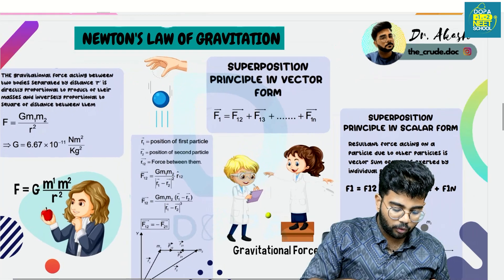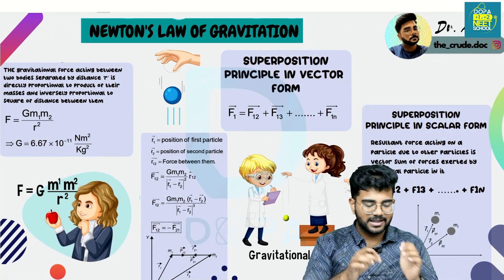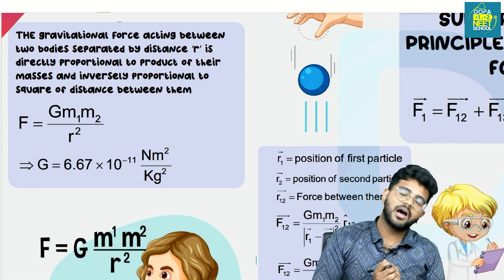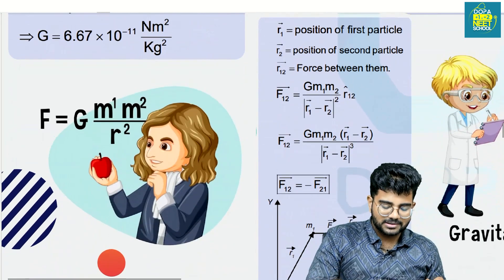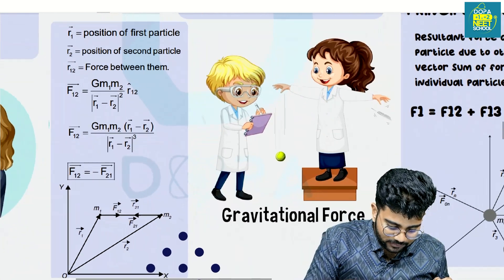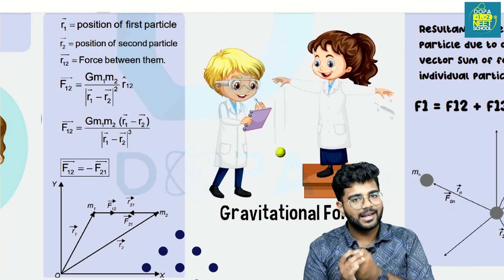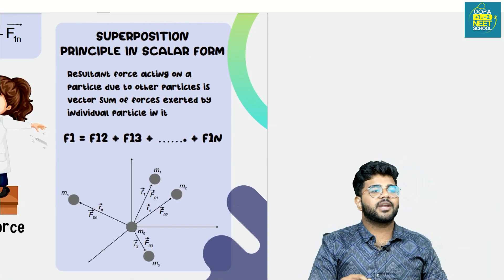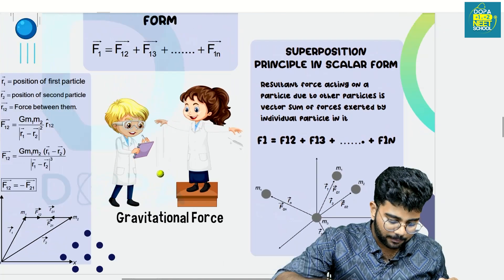The next topic is Newton's law of gravitation: F is equal to Gm1m2 divided by r squared. We also have the vector form, where F12 is equal to F21. And there is the principle of superposition — when multiple gravitational force vectors act, you should be able to add them together.